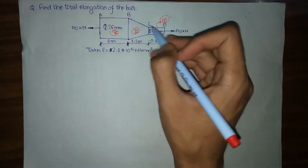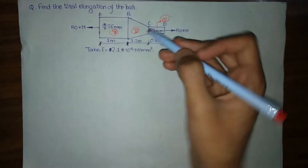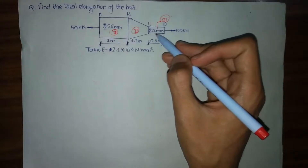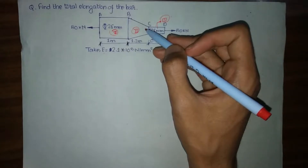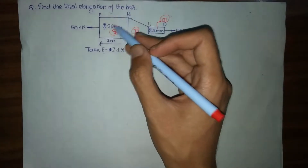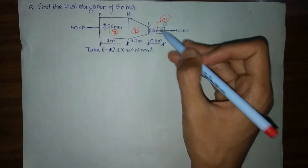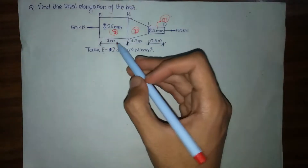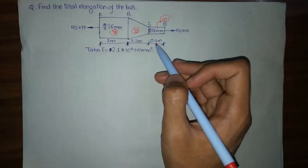For portion BC, the diameter at point B is 26 mm and it uniformly tapers — the diameter uniformly decreases — to 18 mm at side C. So portion BC is a uniformly tapering circular bar. The respective lengths are 1 meter for section AB, 1.2 meters for BC, and 0.8 meters for CD.